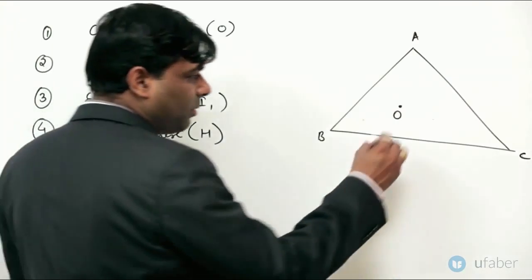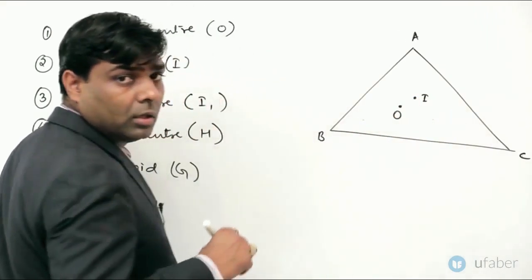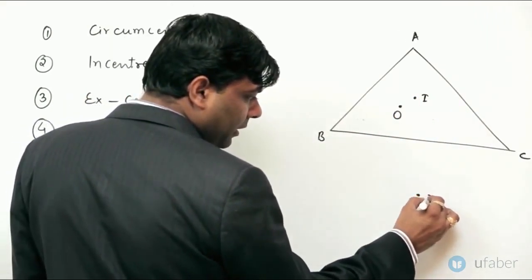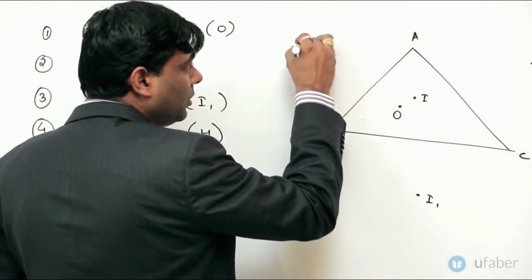Incenter kya hai? Jaha par sare angle bisector milte hai, woh incenter ho ga. So, let's say this point is I. Jaha par hama hai paas ho ga I1. Jaha par ho ga I2. Jaha par ho ga I3.